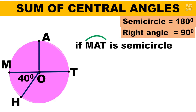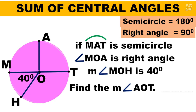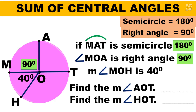Recall that the semicircle is 180 degrees and a right angle is 90 degrees. Given that arc MHT is a semicircle, angle MOA is a right angle, and the measure of angle MOH is 40 degrees: since arc MHT is a semicircle it measures 180 degrees, and angle MOA is a right angle so it is 90 degrees. To find the measure of angle AOT: 180 minus 90 equals 90 degrees, since arc MHT is a semicircle.